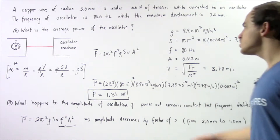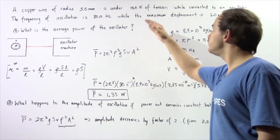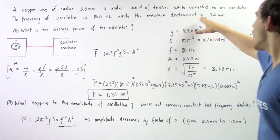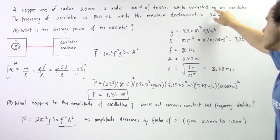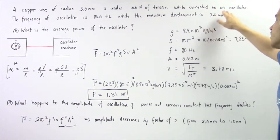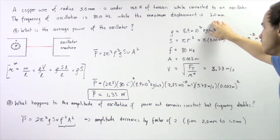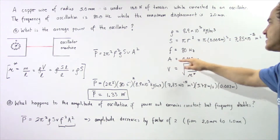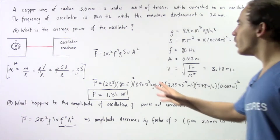The amplitude is simply the maximum displacement of 2 millimeters. We divide by 1000 to convert from millimeters to meters, giving an amplitude of 0.002 meters.